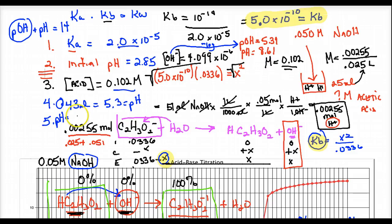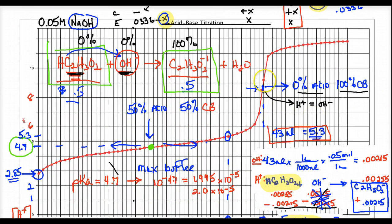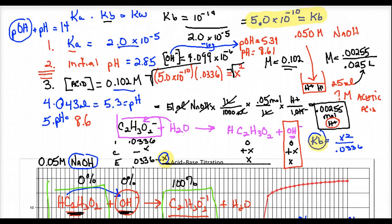Looking at my graph, the equivalence point appears near pH 8.5–8.6, which is certainly plausible and well above 7. The reason it's 8.6 rather than 7 is because all the conjugate base — with a small but nonzero Kb — ionizes water, producing extra hydroxide that drives the pH up.